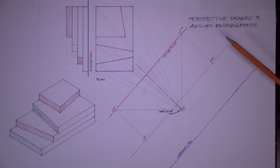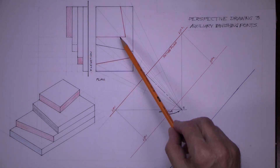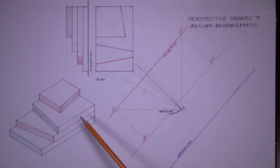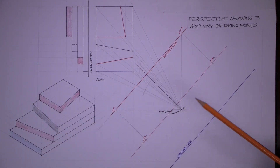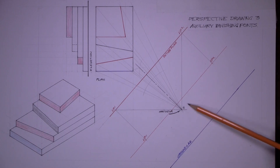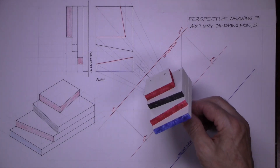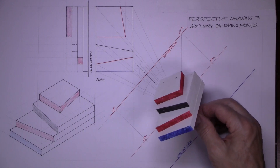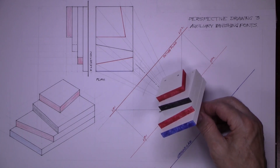Perspective Drawing 3: Auxiliary Vanishing Points. Given the elevation, the plan and the isometric view of this solid, we are asked to draw the perspective view in this position here. This here is the solid — that's more or less the view we have to get.